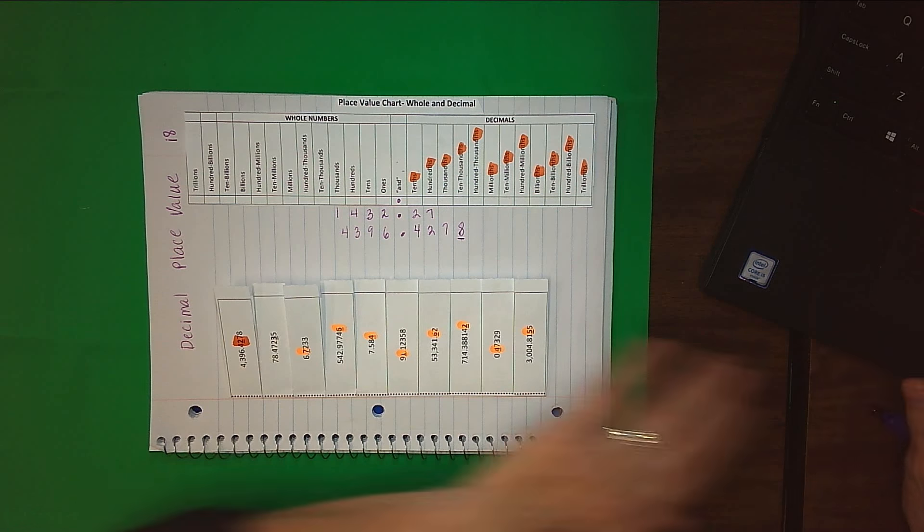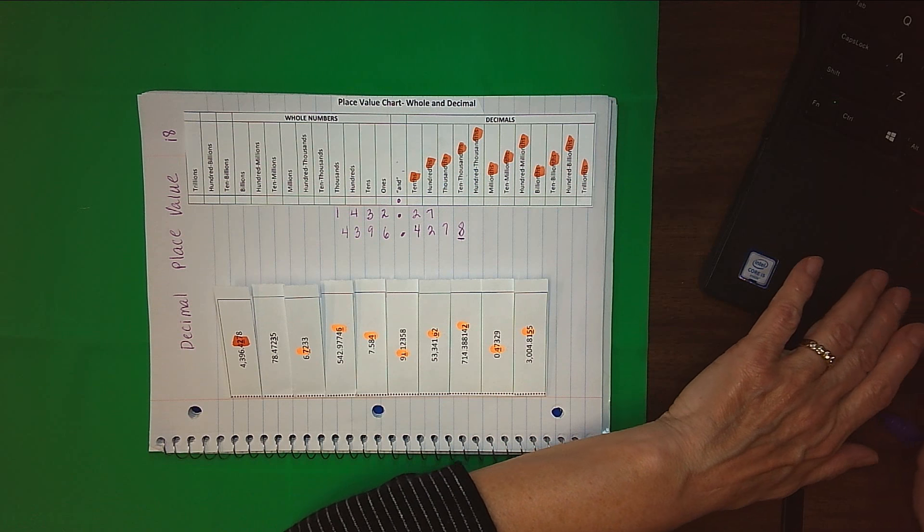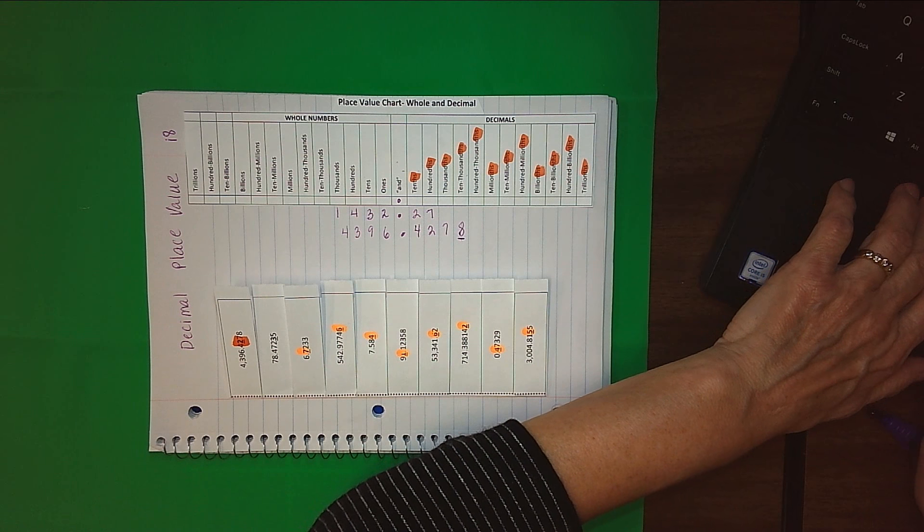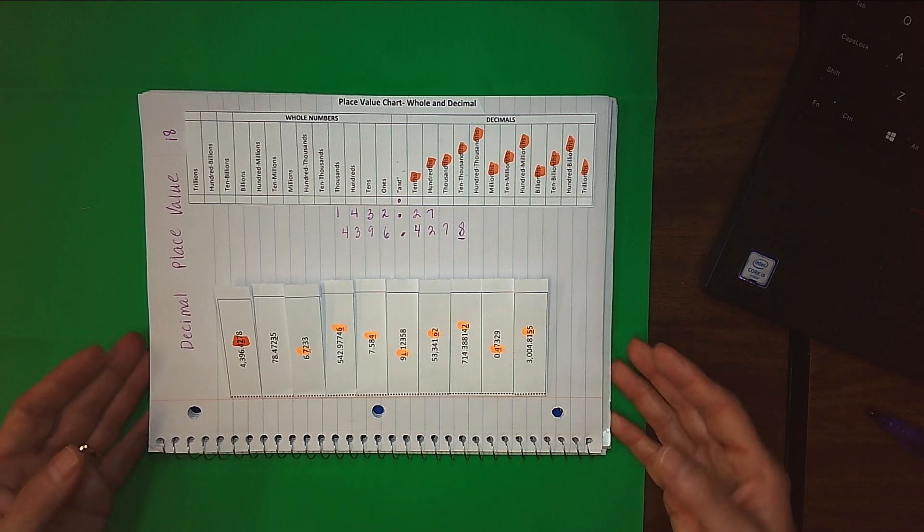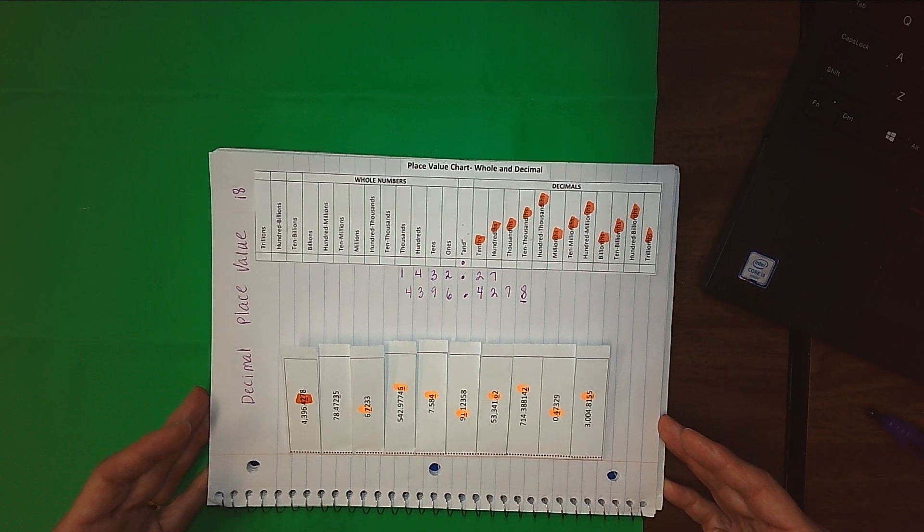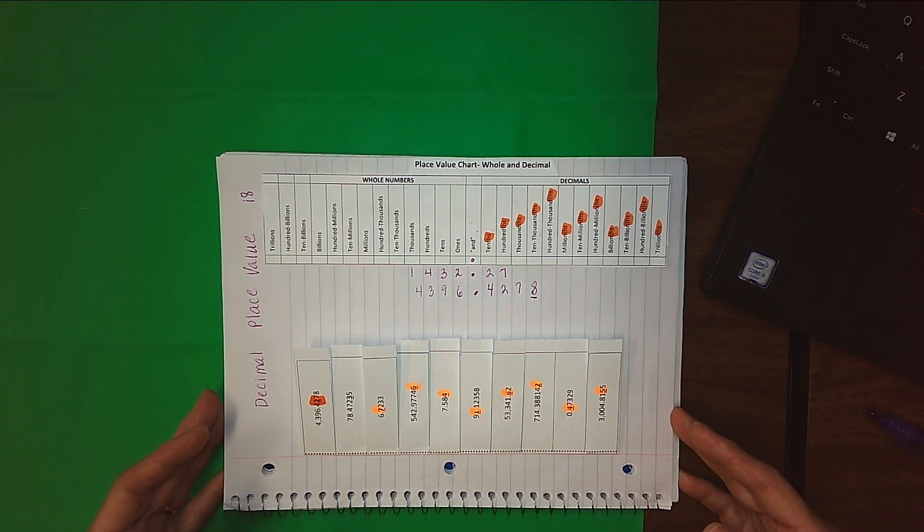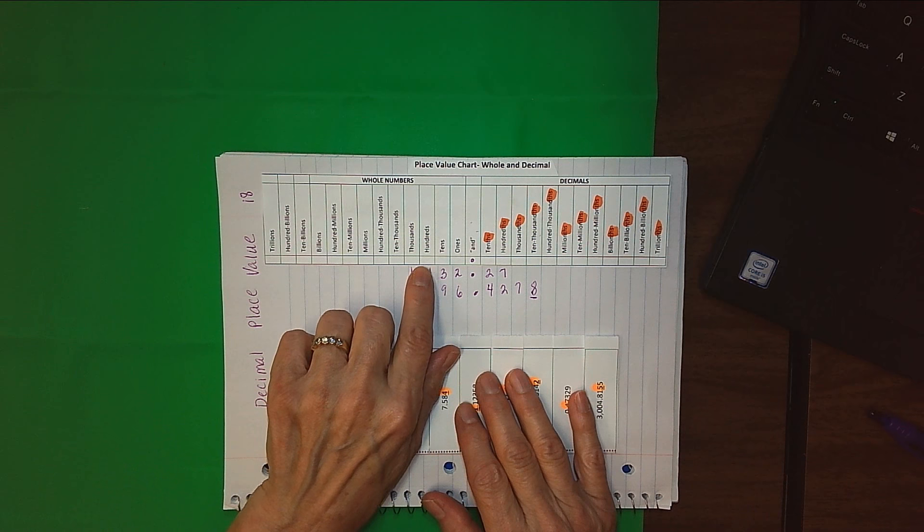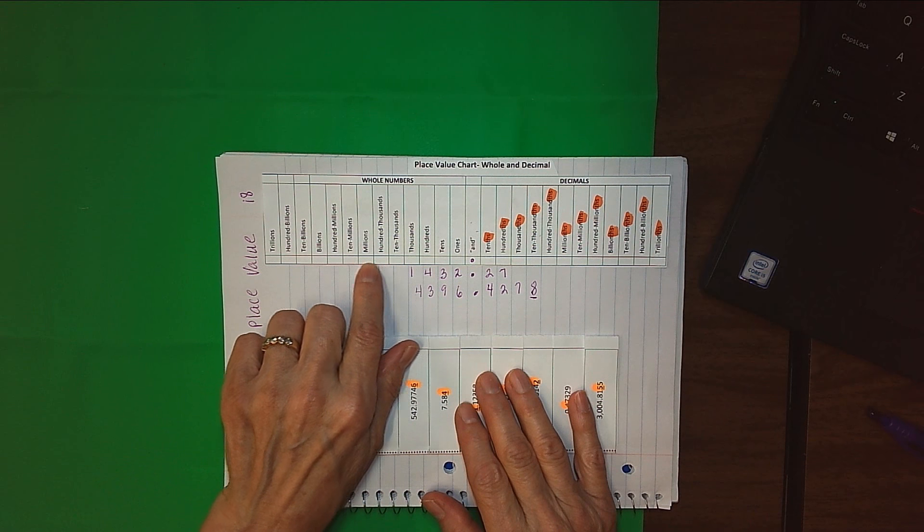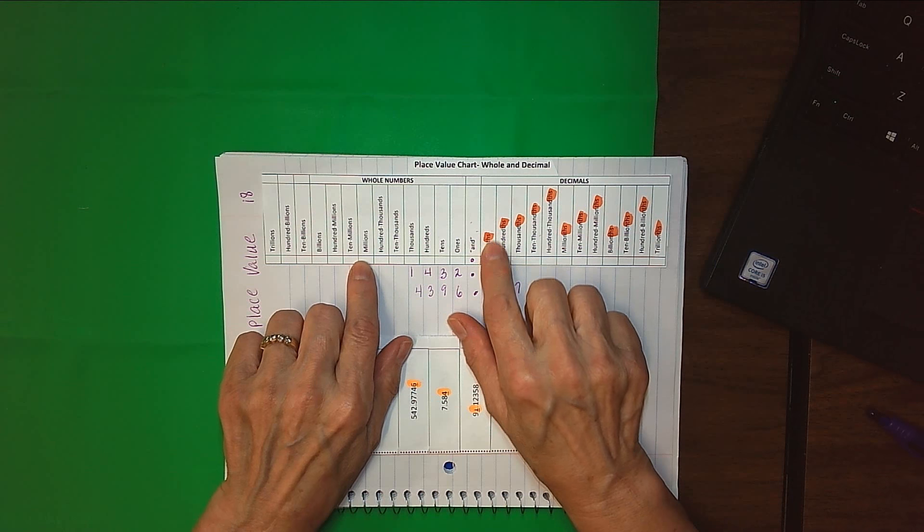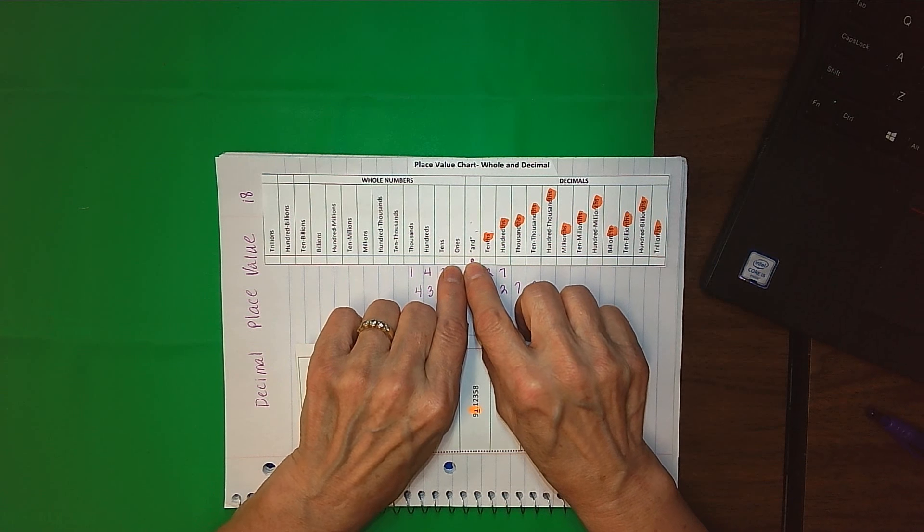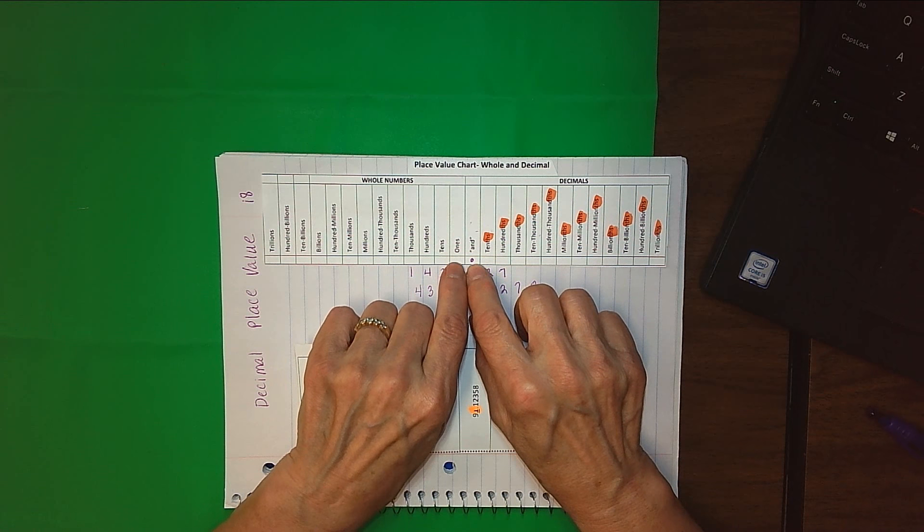I want you to look at this place value chart and you can see that it mirrors around the decimal point. You're used to our whole numbers going ones, ten, hundred, thousand, ten thousand, hundred thousand, million. The same thing happens on the other side of the decimal point, except that we don't have a ones place. The decimal and the ones place kind of mirror each other.